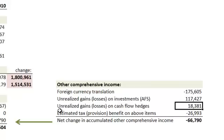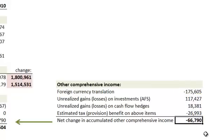Finally, there are unrealized gains or losses on cash flow hedges — derivatives used to hedge. A company can gain or lose on certain hedge instruments and must qualify for hedge accounting, but if it does, those gains or losses do not need to be recognized on the income statement; they can be reported here in other comprehensive income. So those all get added up to a loss of negative $67 million. That does impact the change in total stockholders' equity, but we would not know it by looking at the face of the income statement, which only reports items recognized there.